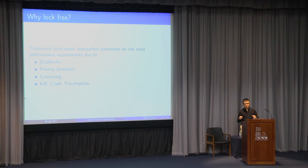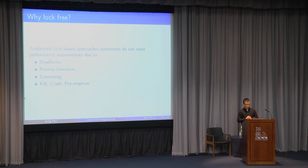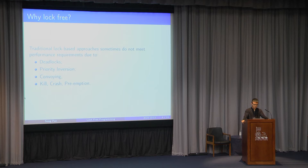Priority inversion is when a high-priority thread competes with a low-priority thread for the same mutex but the low-priority thread obtains it and gets scheduled less often by the scheduler. So the high-priority thread is forced to sleep until the low-priority thread finishes and releases the mutex. In the meantime, medium-priority threads get scheduled more often than the high-priority thread — that's the name 'inversion'.